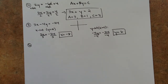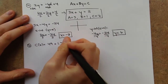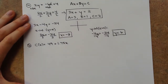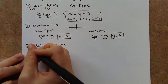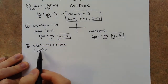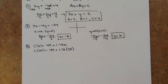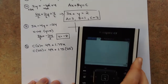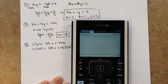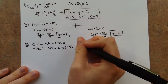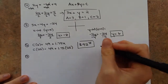Number 6 is multiple choice. The cost of producing x pumpkin pies is given by c(x) equals 49 plus 1.75x. Find the cost of producing 25 pies — replace x with 25. So 49 plus 1.75 times 25. Plugging into the calculator gives 92.75. Since it's a dollar amount, write it as $92.75. On the multiple choice, that would be letter C.